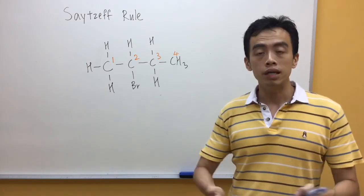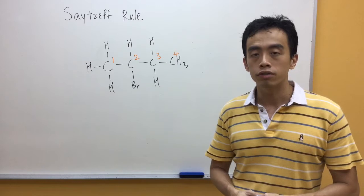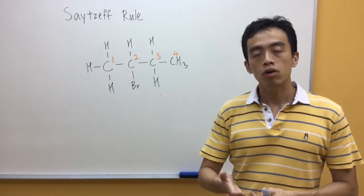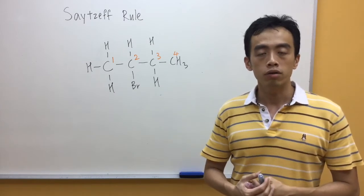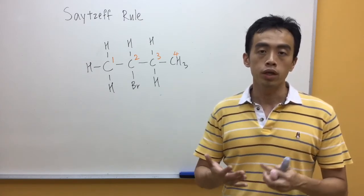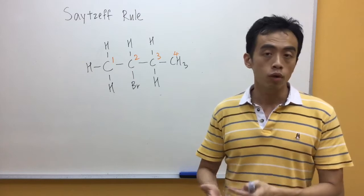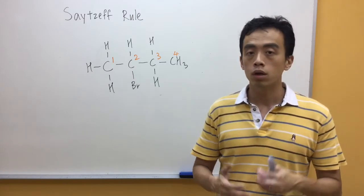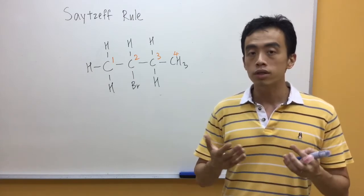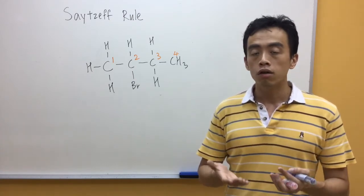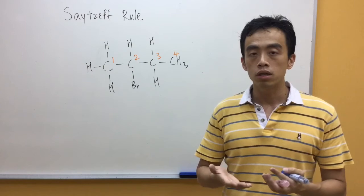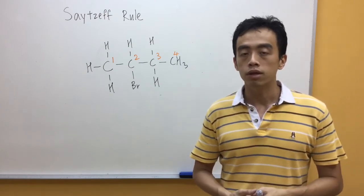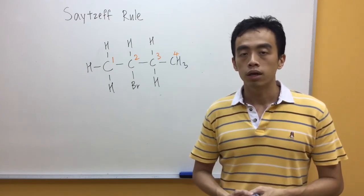Now, sometimes during elimination reactions of alcohols and haloalkanes to form alkenes, we can form more than one possible alkene. So, we use the CZF rule first to determine which alkene is the major product and which alkene is the minor product.